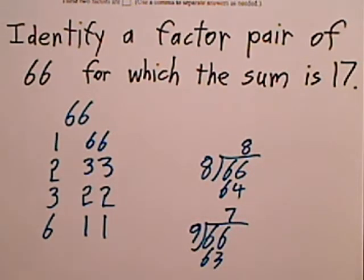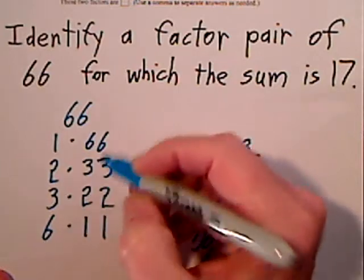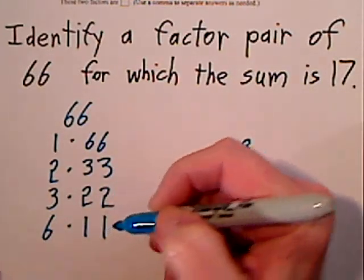Now we want a factor pair. Technically I should put dots here, okay? Because these would get multiplied. This gives me a 66, 66, 66, and 66.